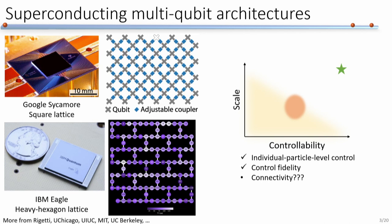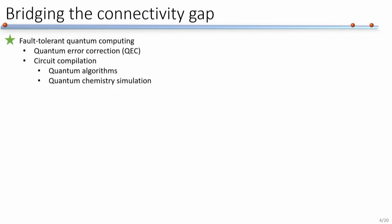We want to have higher connectivity. We already heard from Stephanie about why we want higher connectivity from a general perspective, and here I'll give a more technical version. If we have longer-range gates in our system toward fault-tolerant quantum computation goals, it helps a lot in reaching quantum error correction, as well as compiling circuits for algorithms and quantum chemistry simulations.